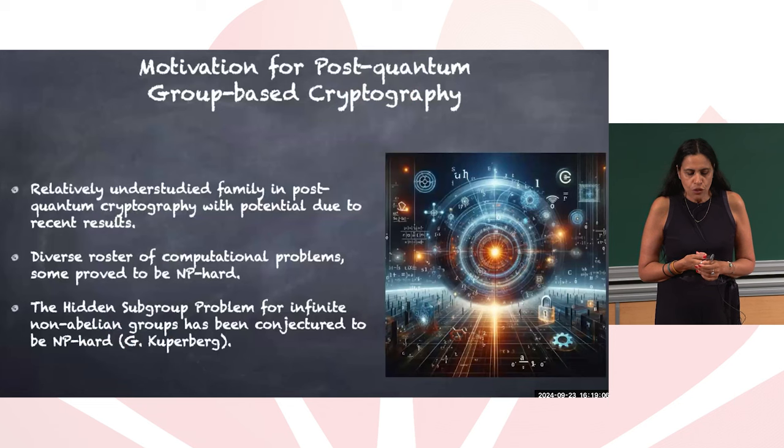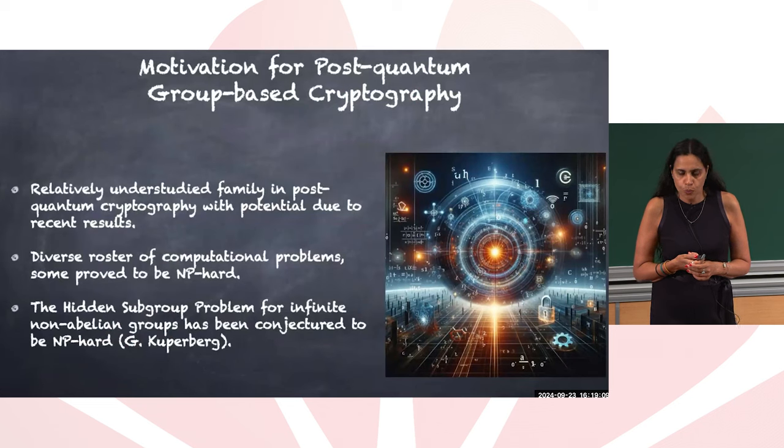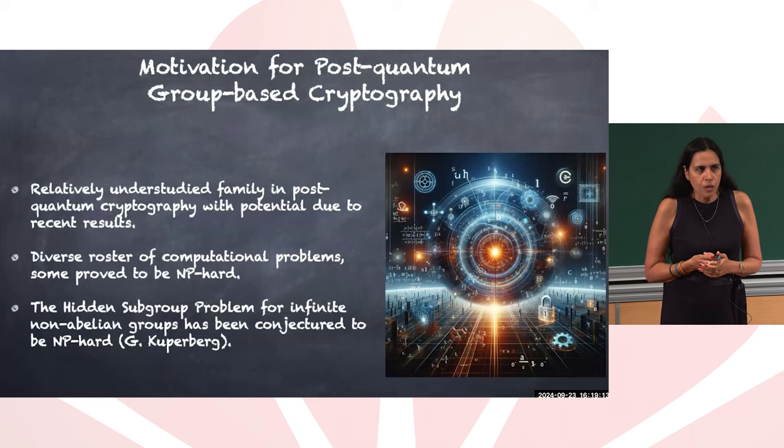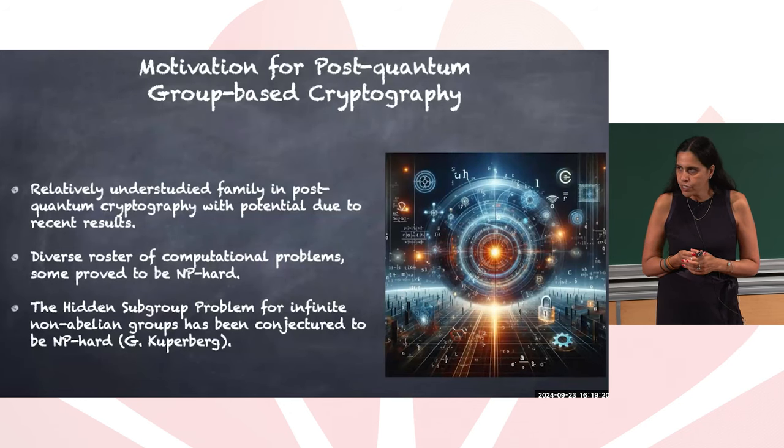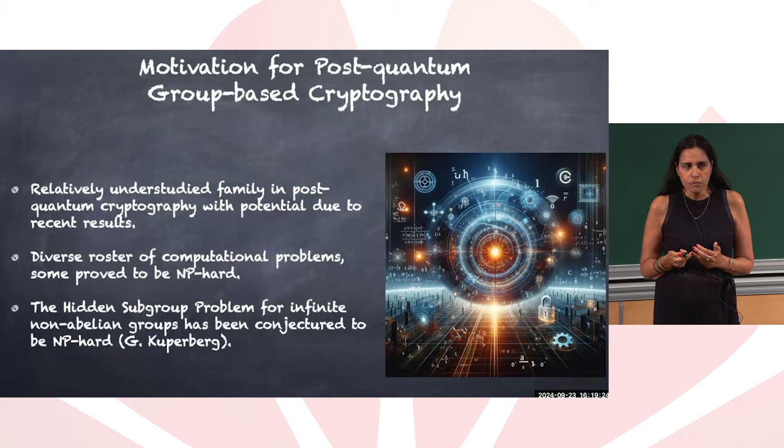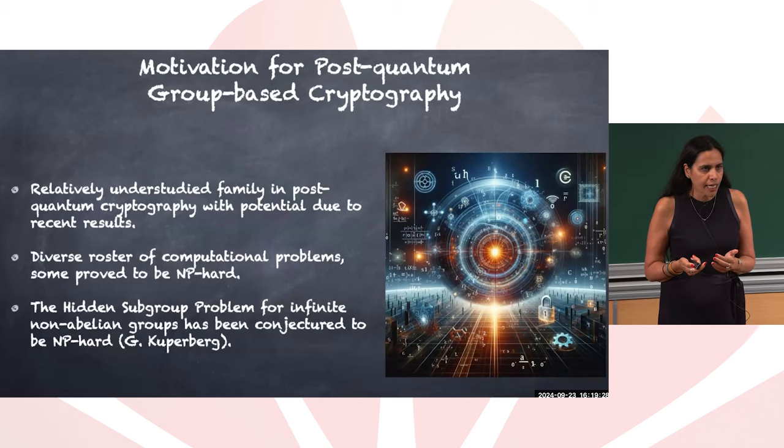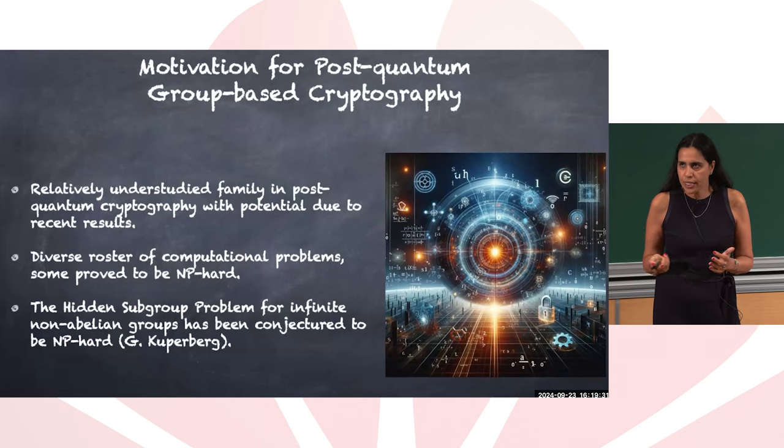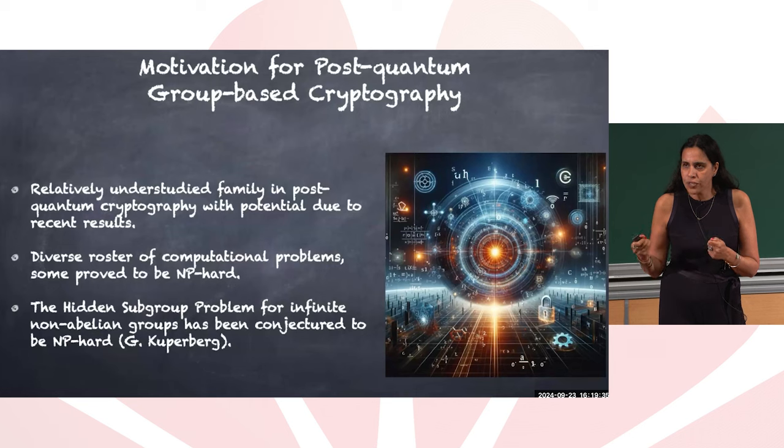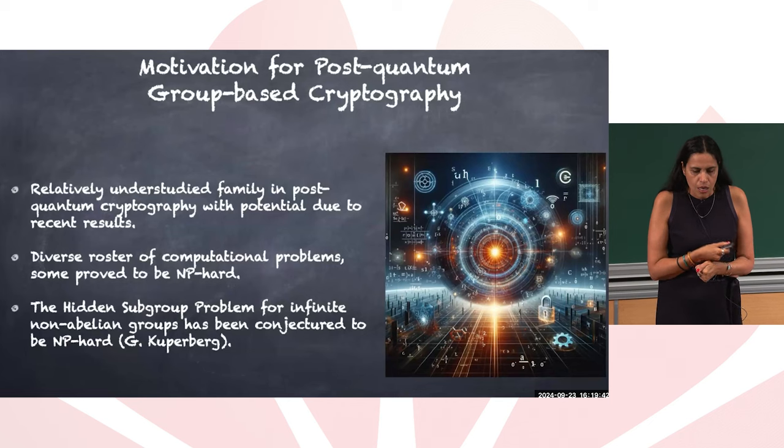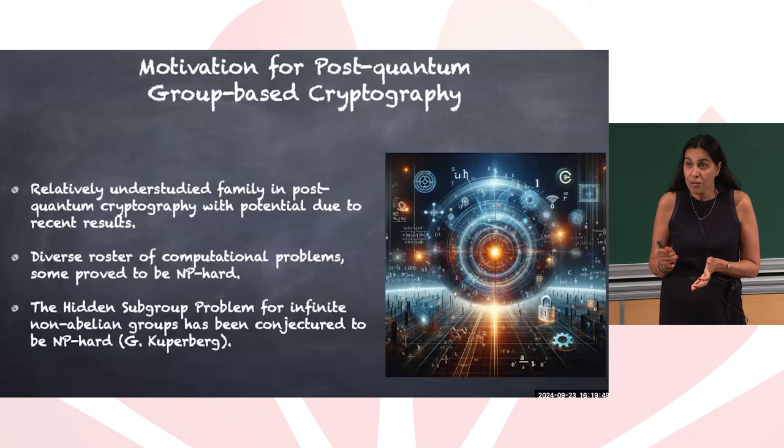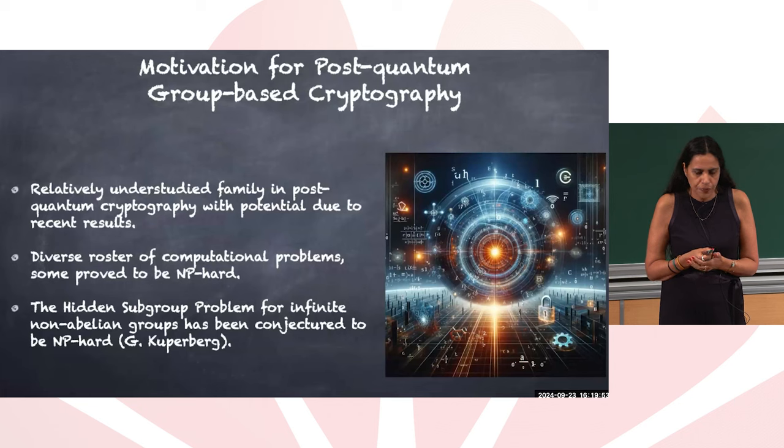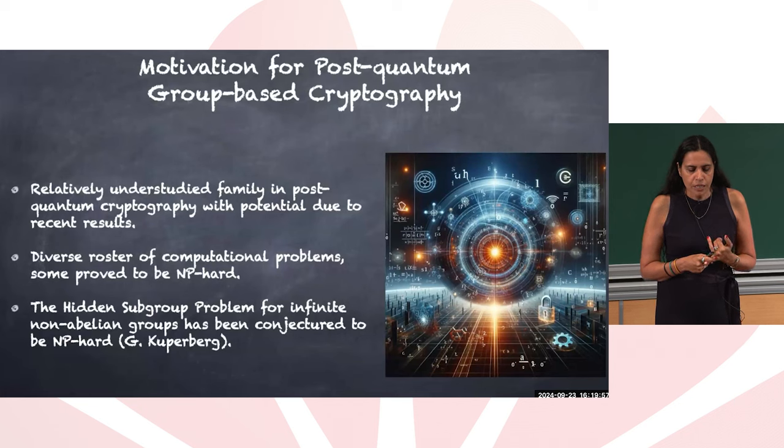I have to tell you the motivation for post-quantum group based cryptography. First of all, I would like to mention that cryptography, for example RSA or Diffie-Hellman, they all use groups, but in which those groups are finite, abelian or cyclic. They are abelian, meaning that the elements of these groups commute, like five times two is the same as two times five. But the groups that I consider in this talk, they are so-called non-commutative, non-abelian, in which some or all of the elements do not commute.